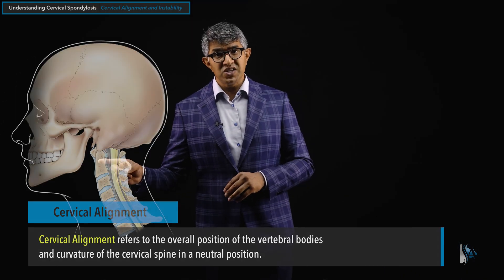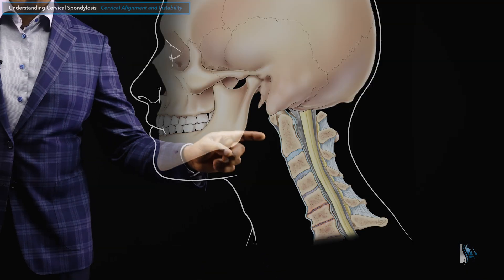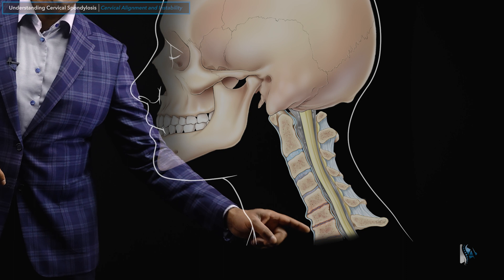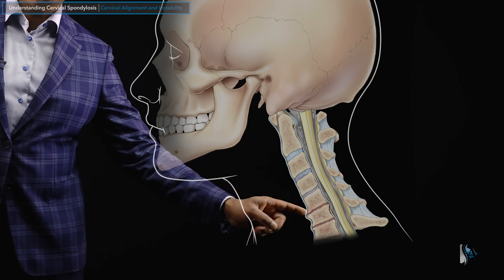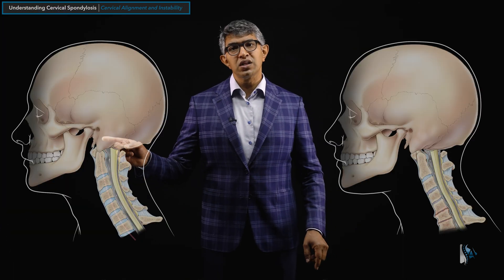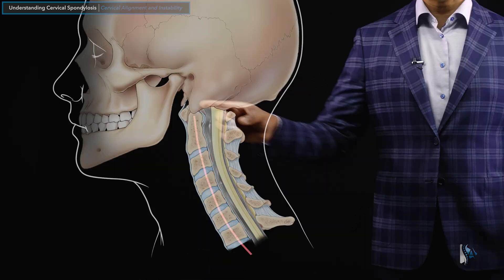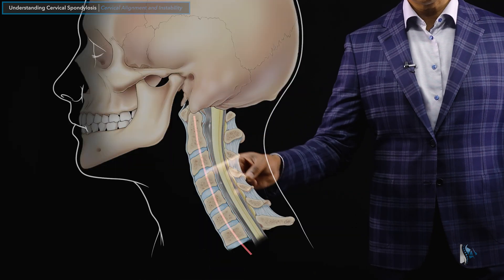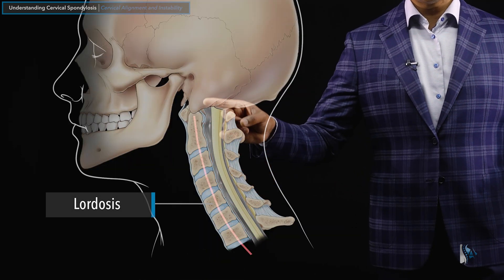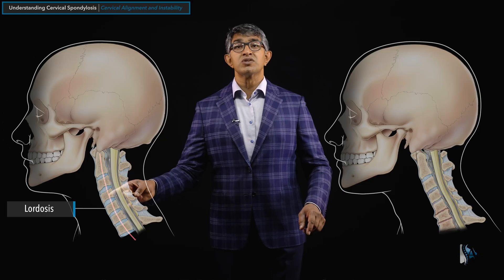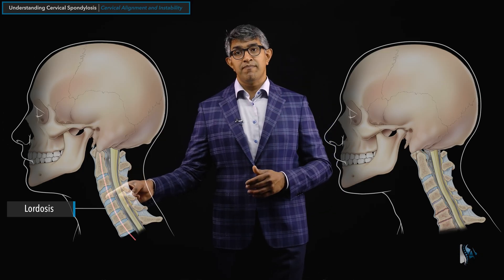Here you can see a nice normal architecture. And then on this person, you can see that as the discs degenerate, they lose that curvature. If you look at a line that goes straight down the middle of the vertebral bodies, that curvature is called lordosis — a curve that goes kind of backwards like that.